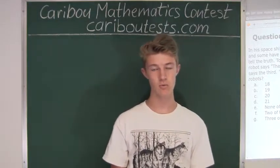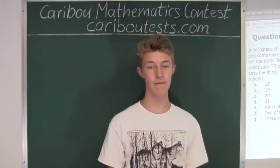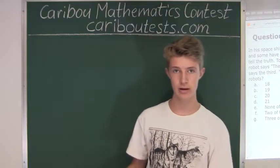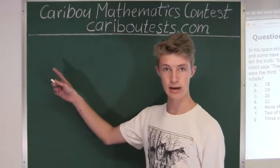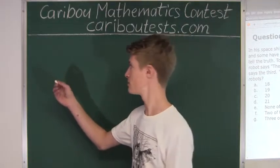And since we know that lying robots have five arms, we know that three times five is equal to fifteen, so already a guaranteed total of fifteen arms.